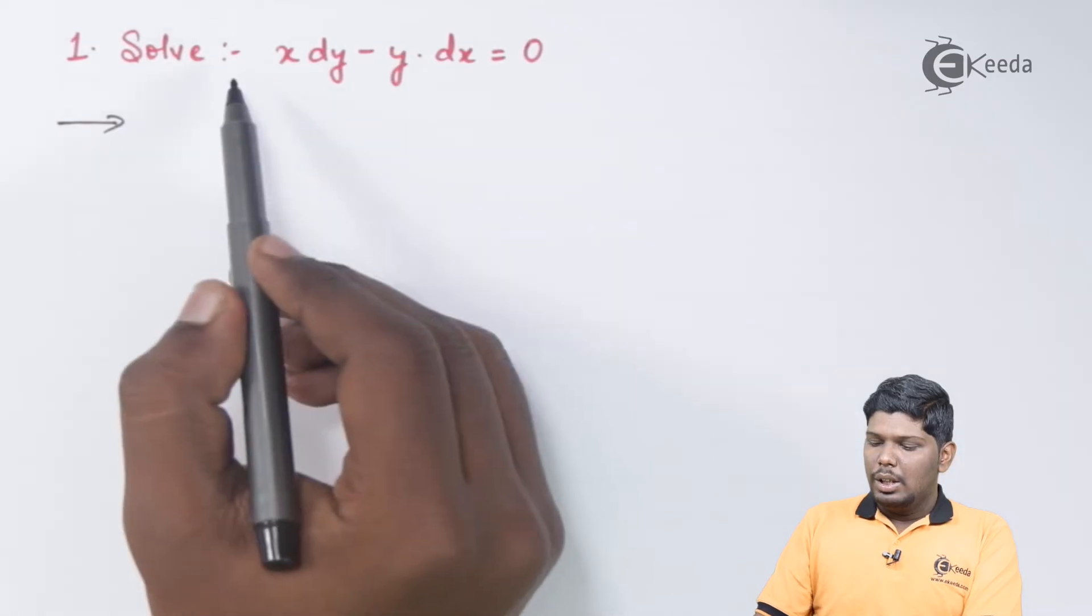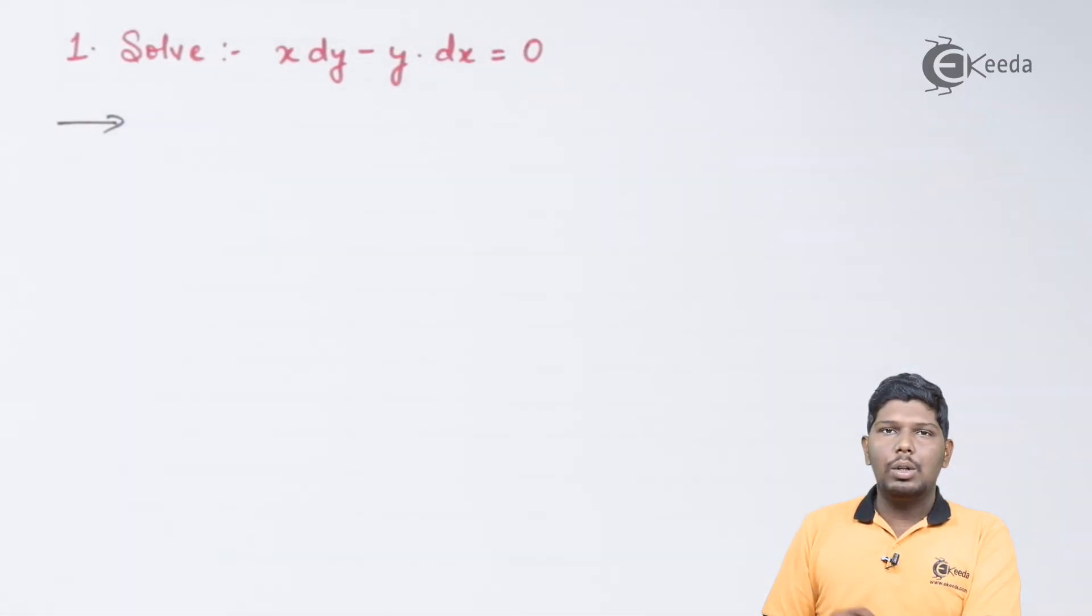In problem number 1, solve x dy by dx minus y dx is equal to 0.